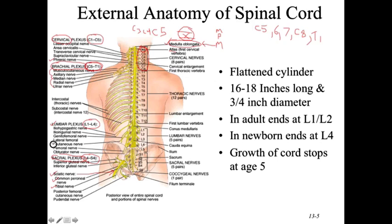The lateral femoral cutaneous nerve from the lumbar plexus, when compressed, causes a condition called meralgia paresthetica — almost like a reverse sciatica — where the individual experiences numbness and tingling to the front and lateral aspect of the thigh. It's commonly seen in pregnant women, obese individuals, people wearing tight belts or jeans, police officers with heavy duty belts, or construction workers with tool belts.